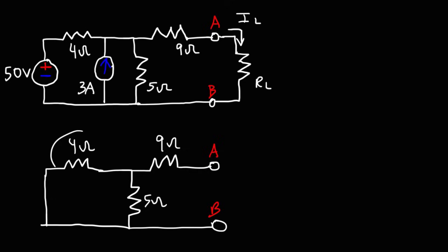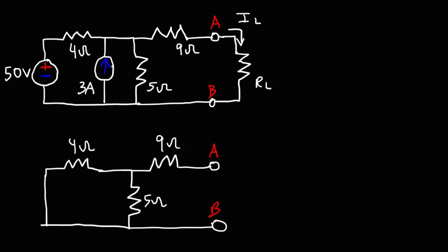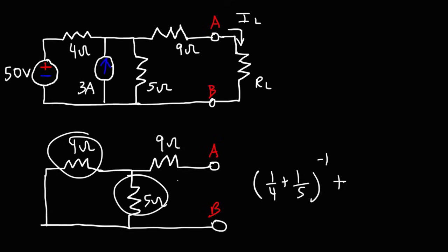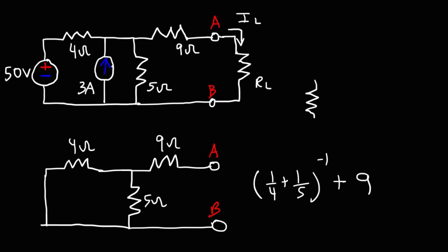Notice that the 4 ohm resistor is in parallel with the 5 ohm resistor. So the equivalent resistance of those two resistors will be (1/4 + 1/5)^(-1). These two resistors are in series with the 9 ohm resistor, so we can add 9. You can redraw the circuit to help you see it better.